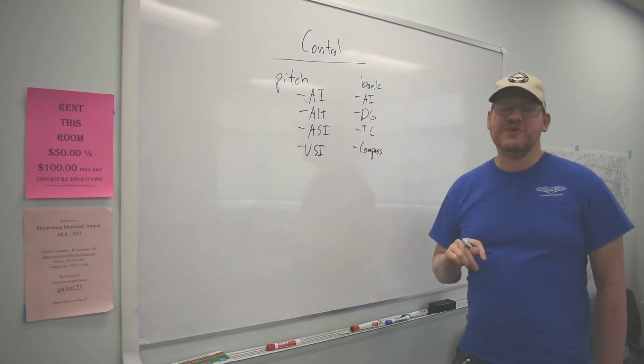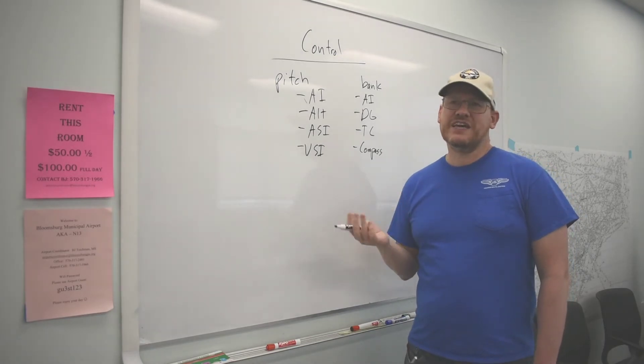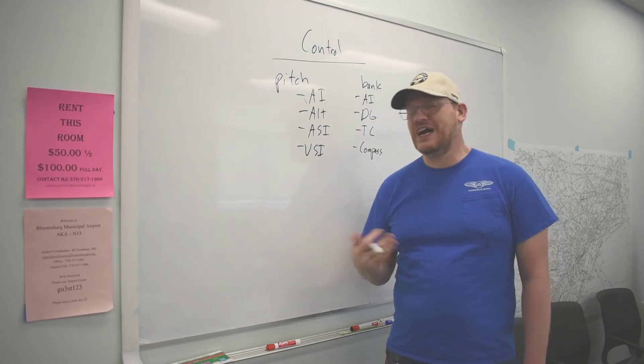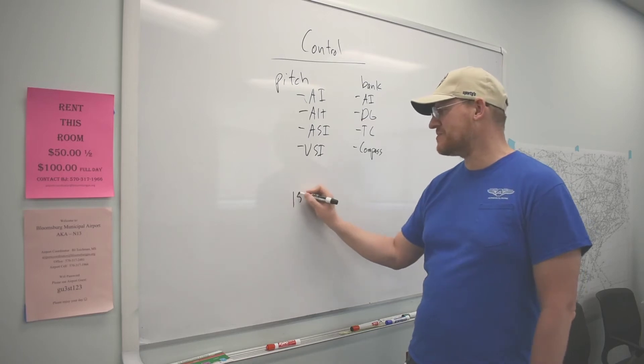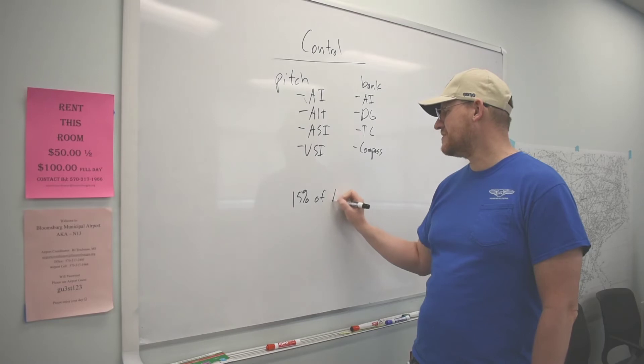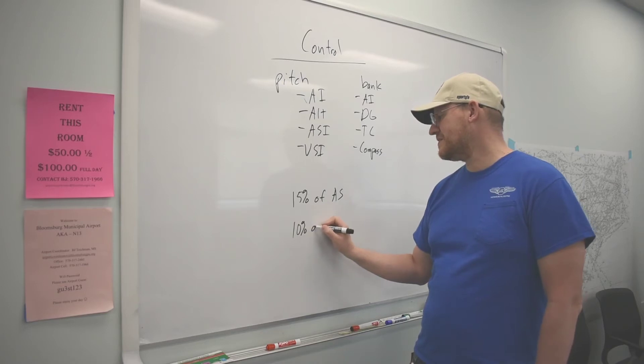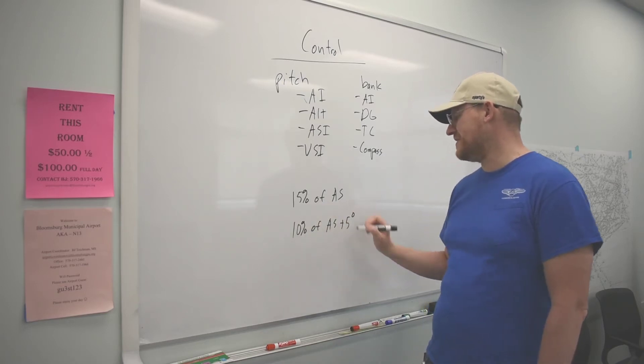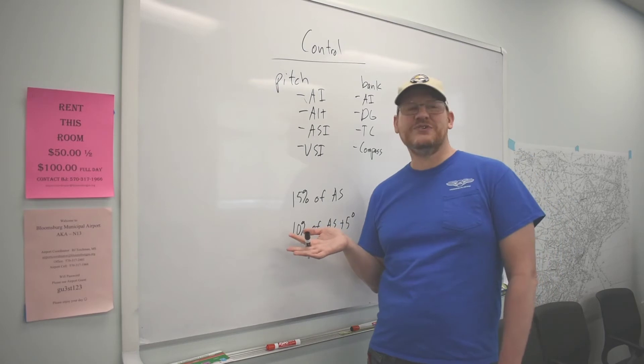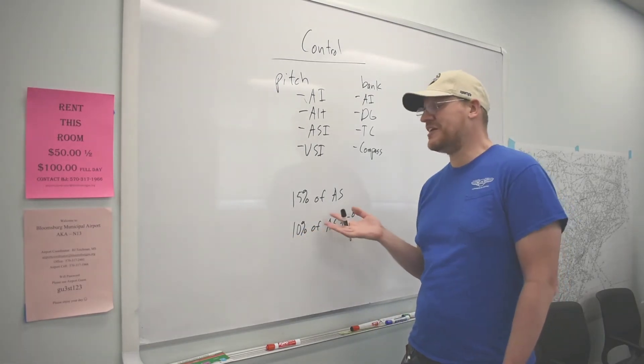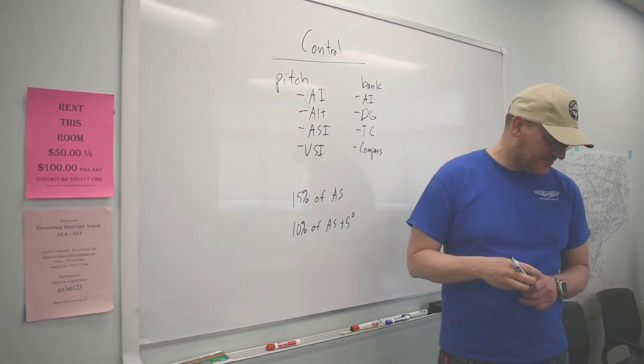By the way, just a little rule of thumb, what's my bank angle going to be for me to fly a standard rate turn? Some people will say take 15% of your speed. And other people will say 10% of your airspeed plus 5 degrees. And guess what? They're both right because most airplanes you're probably doing instrument training in are cruising around at about 100 knots.